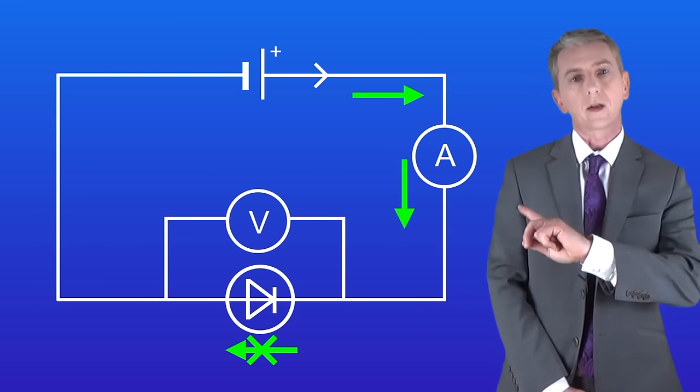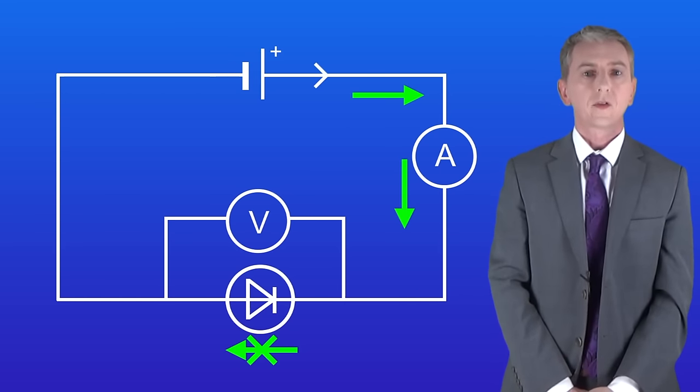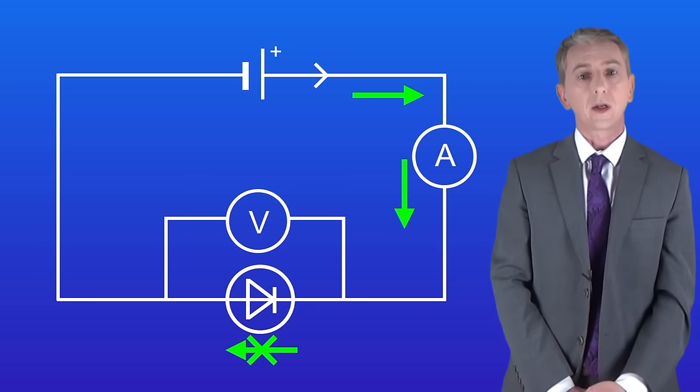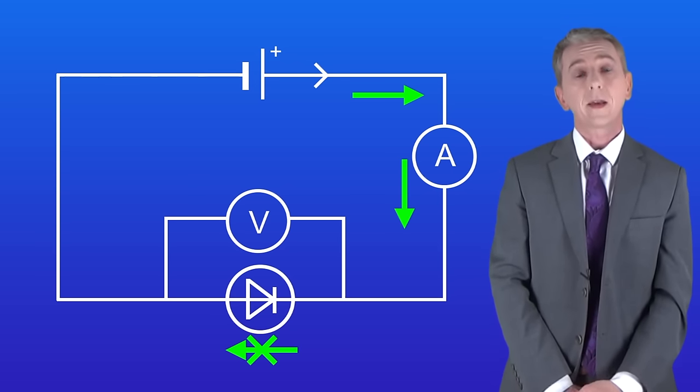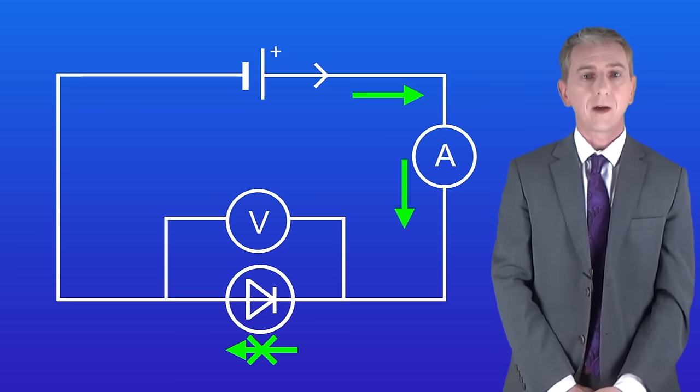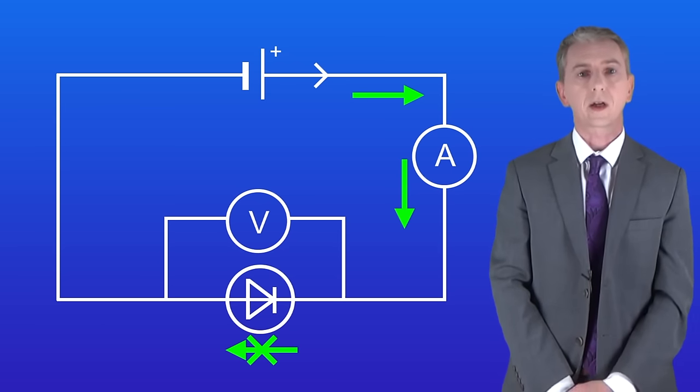But in this circuit, I've turned around the cell, so the current's now flowing in the opposite direction. That means that the diode will not allow the current to pass through, and again that's because the diode has a very high resistance in the reverse direction.